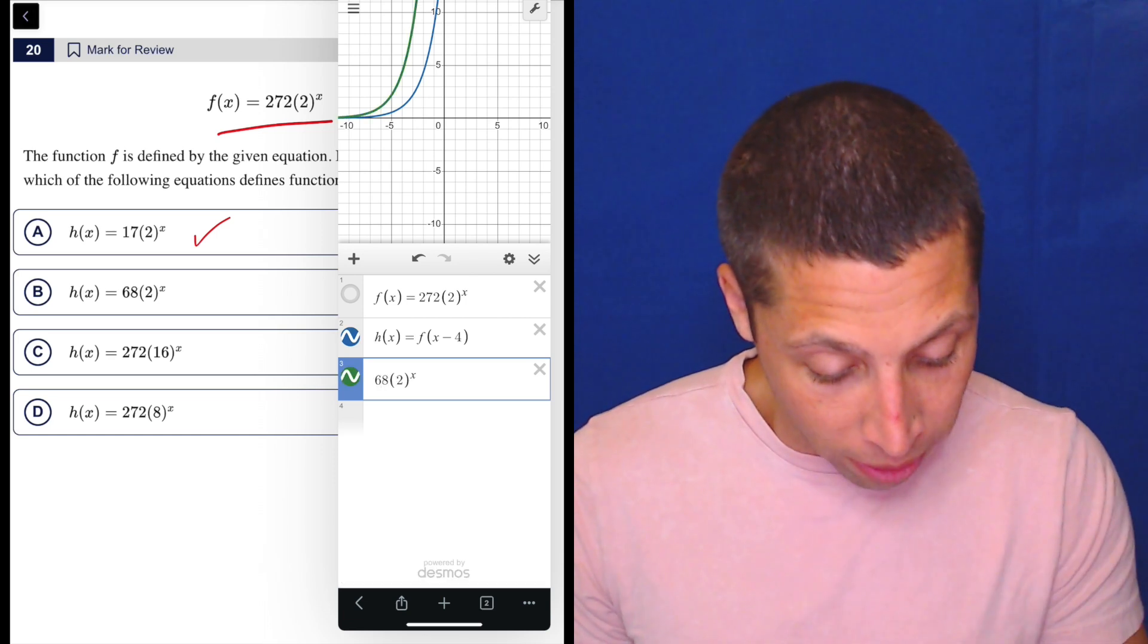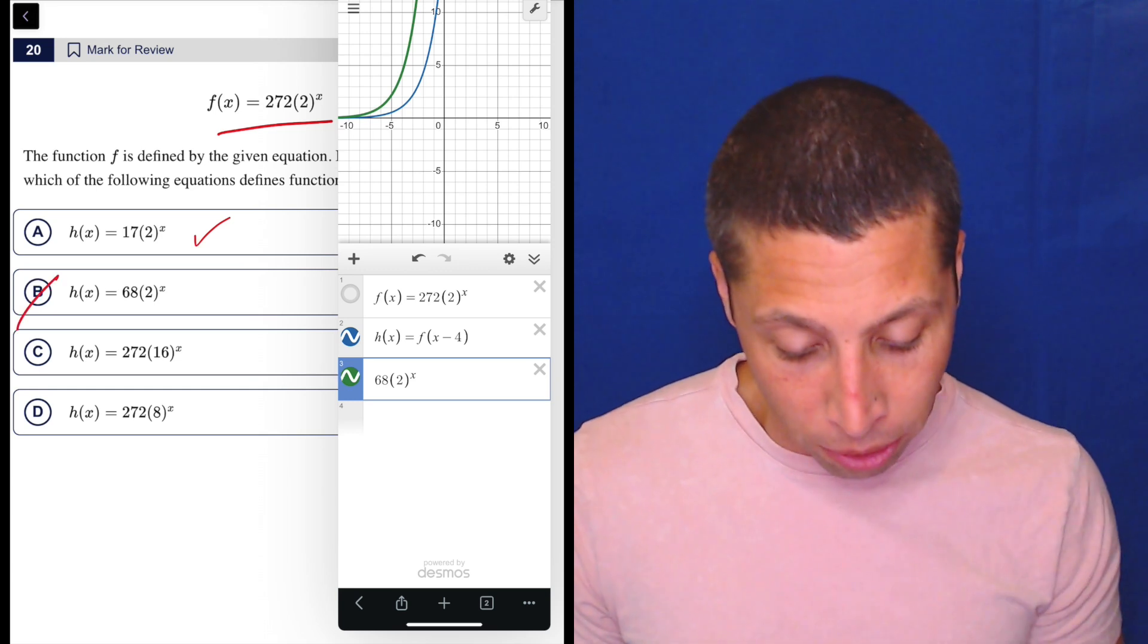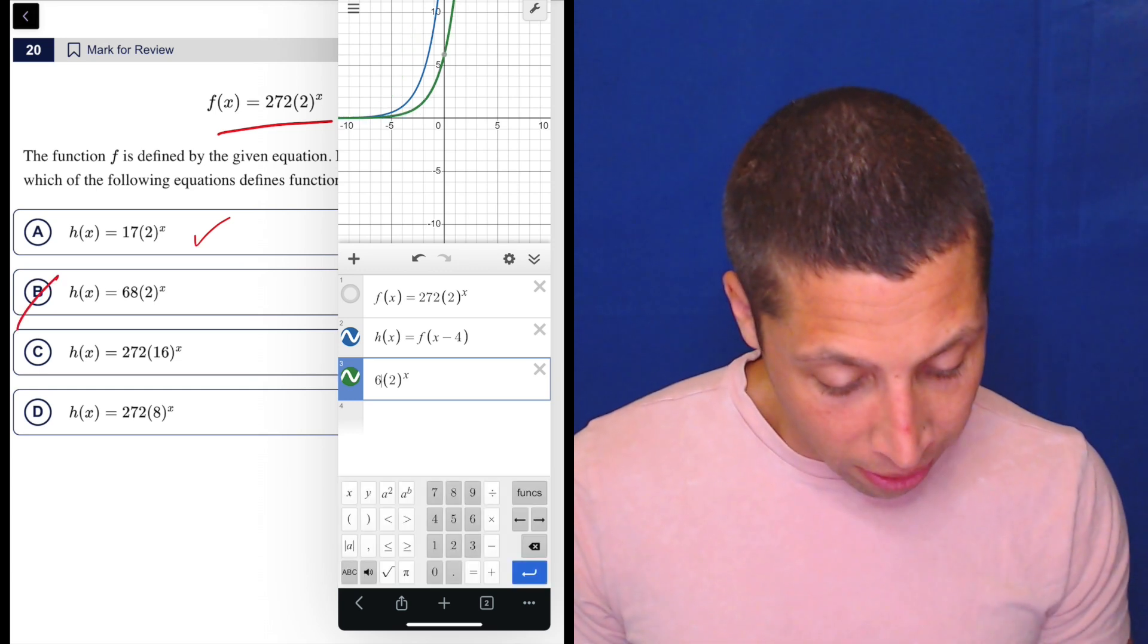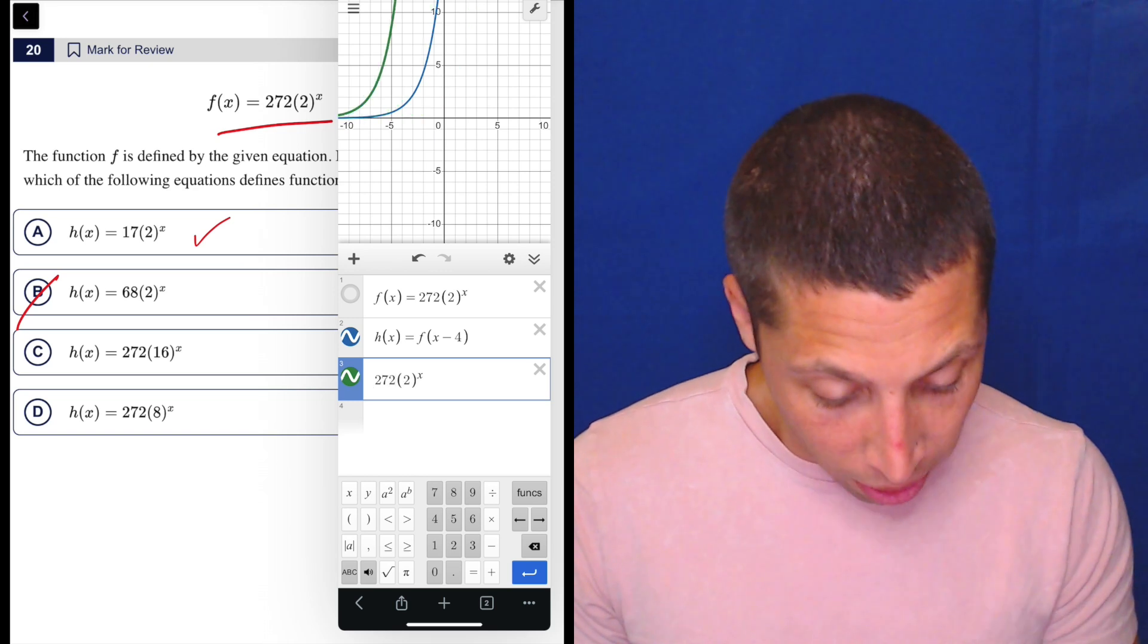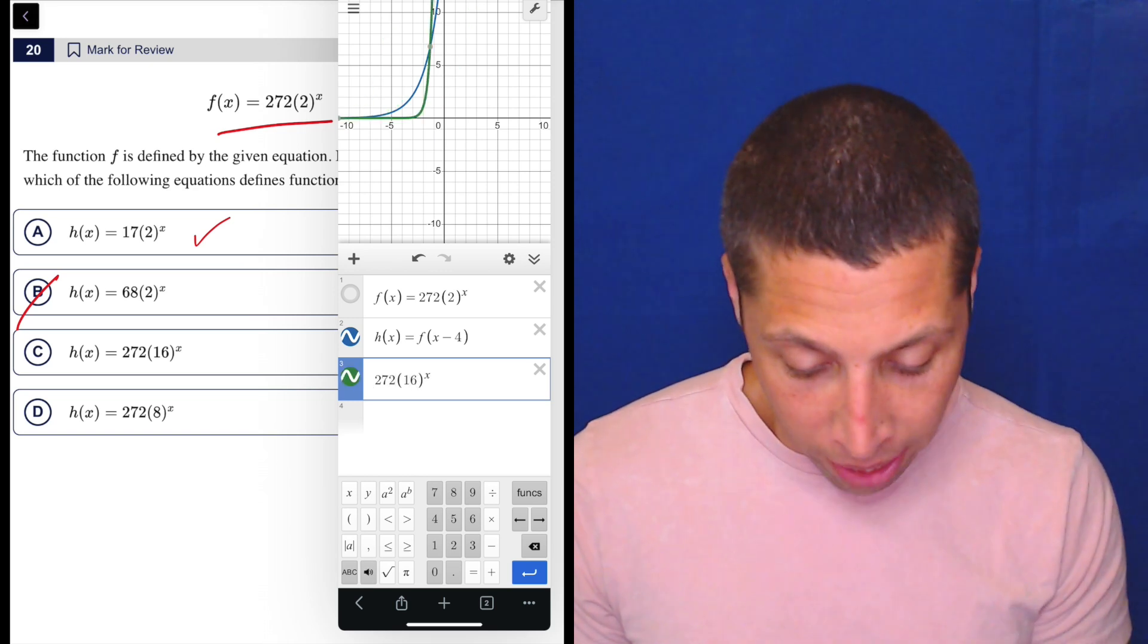If we did 272 times 2 to the x, look, it's a completely different thing, so that's not what we're looking for. If we did 272 times 16 to the x, again, not right.